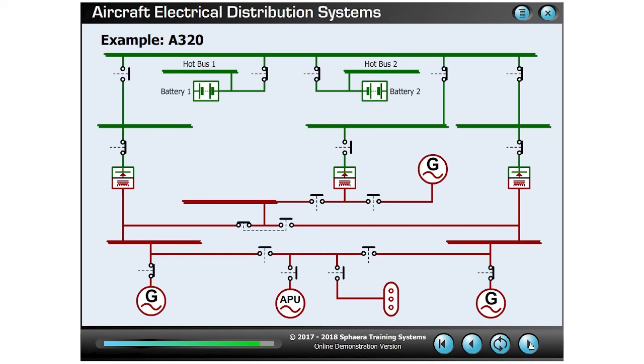But what about AC power in the event that all AC generation has been lost? If this happens, the system can still create AC power from the batteries. This is performed by a static inverter, which transforms the DC power from battery one to supply the AC essential bus.